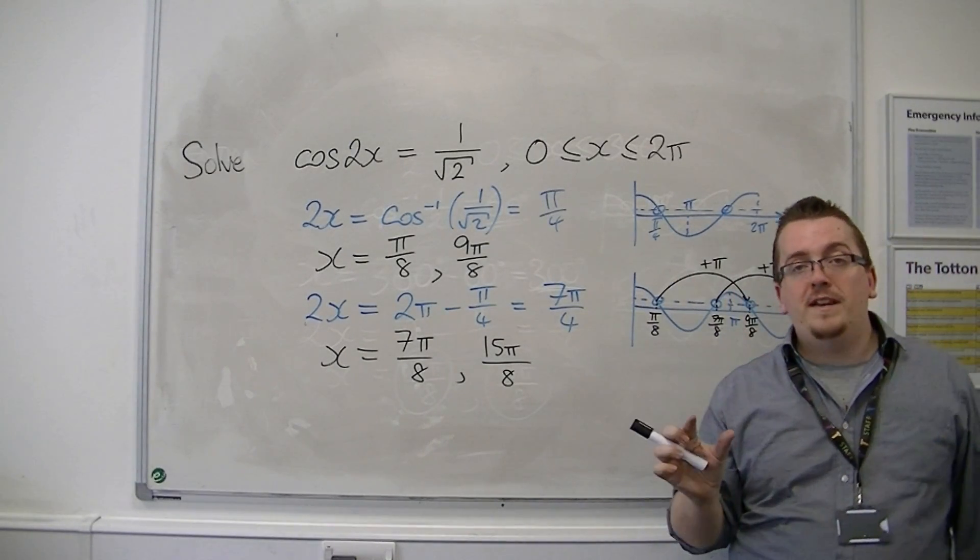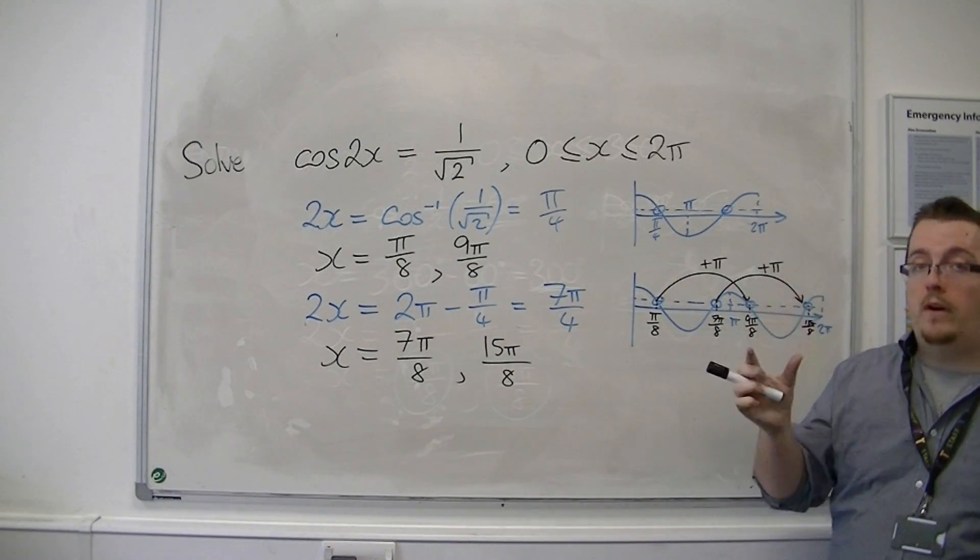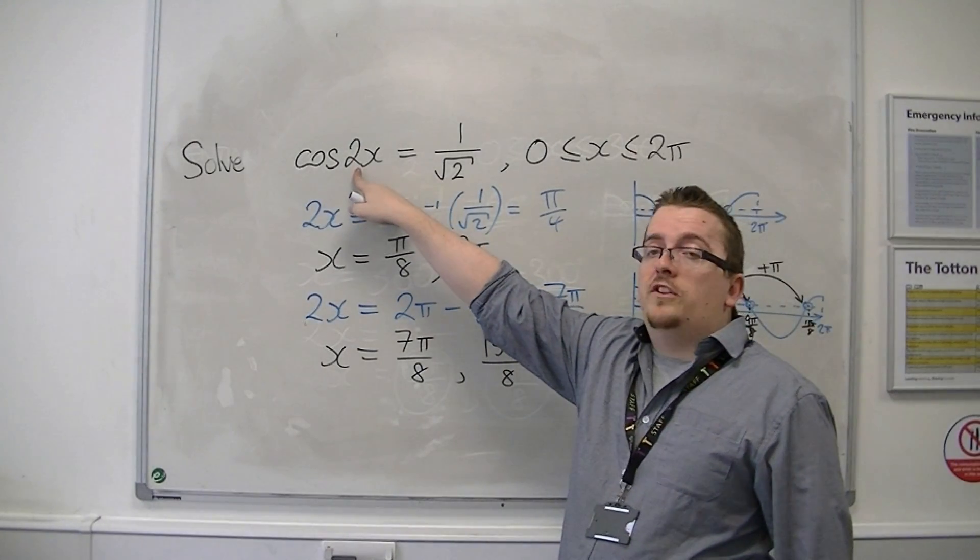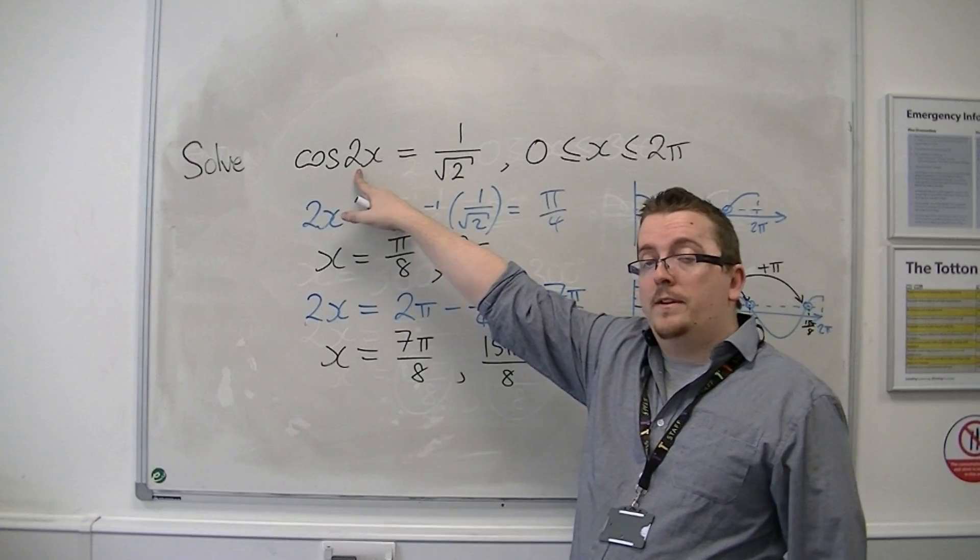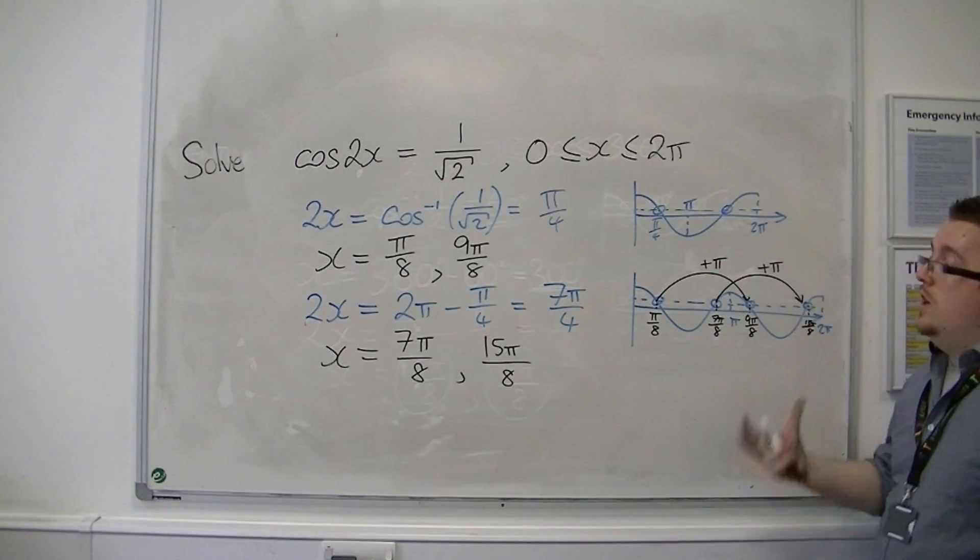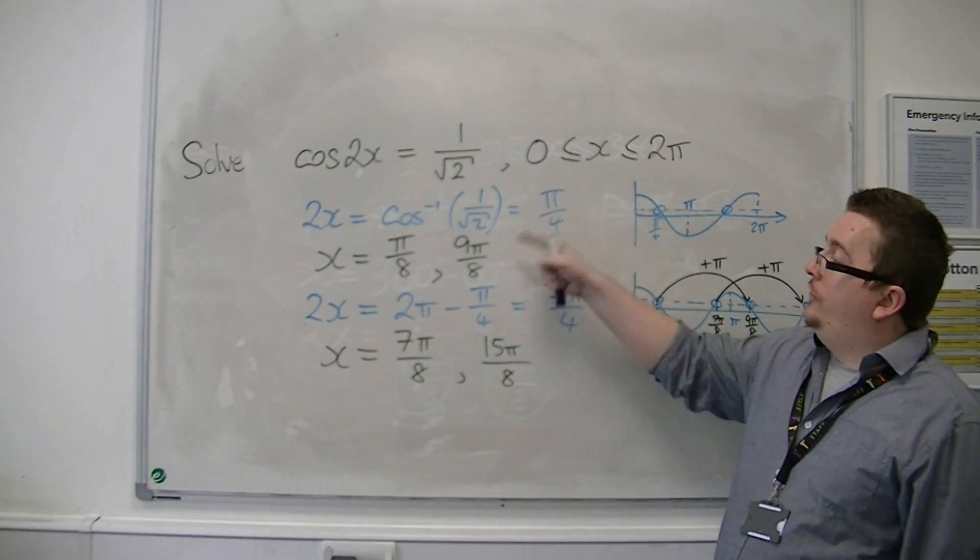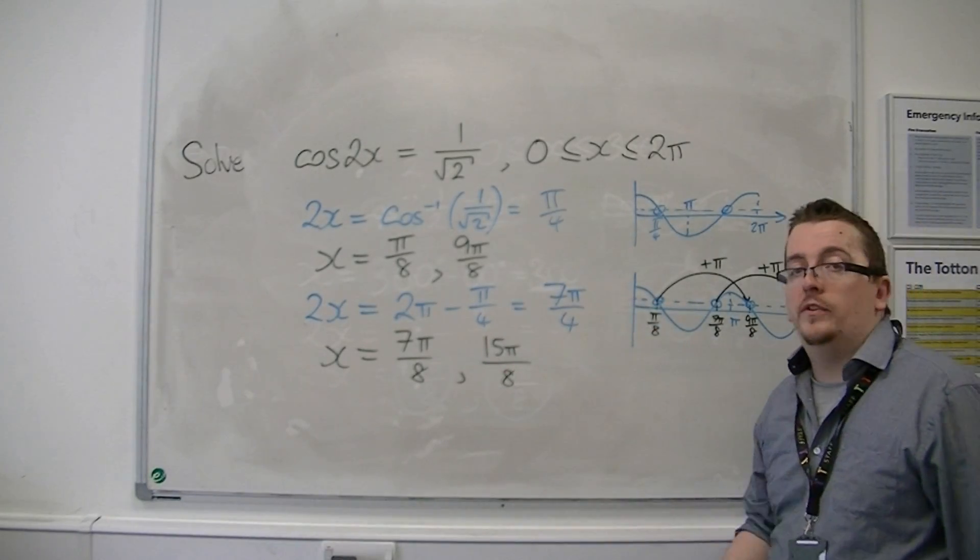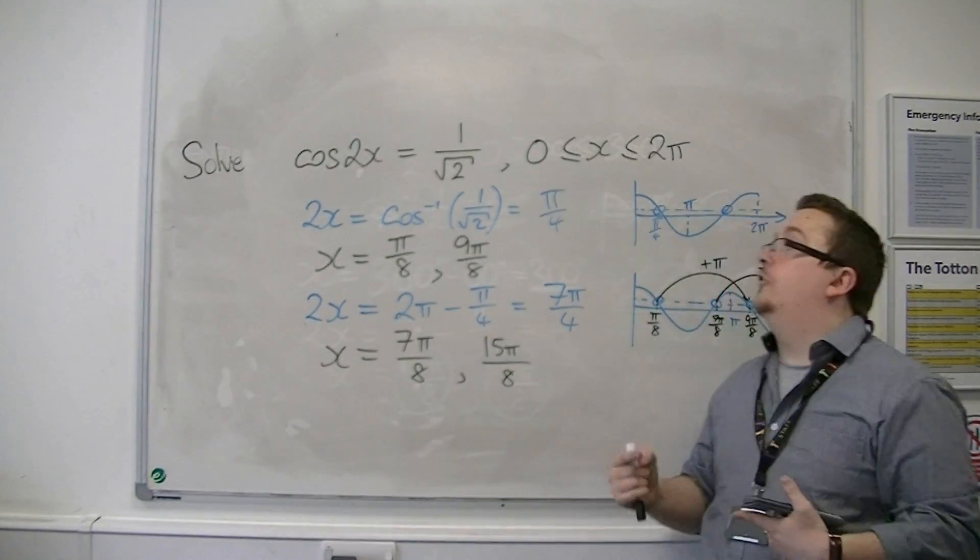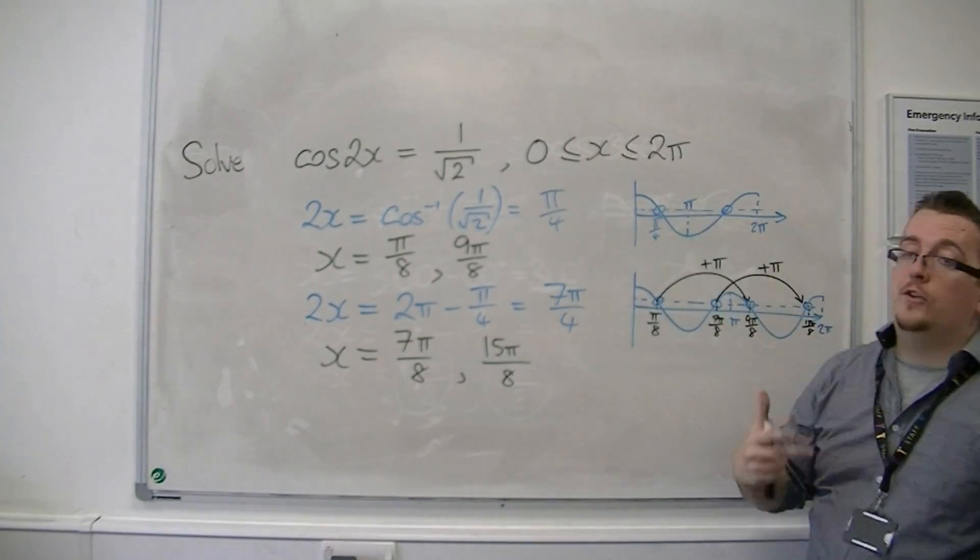So you're always dividing the 2pi by that number that's in front of the x to work out the period here. Once you know that, you can just add multiples of that amount to your initial solutions in order to find all the ones between the two values that you're looking at.